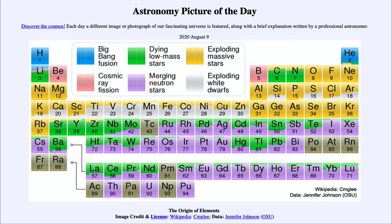Today's picture for August the 9th of 2020 is titled 'The Origin of Elements.' This is a periodic table showing the elements from 1 through 94 and describing where we think they are formed — how these elements are actually formed and where they come from.